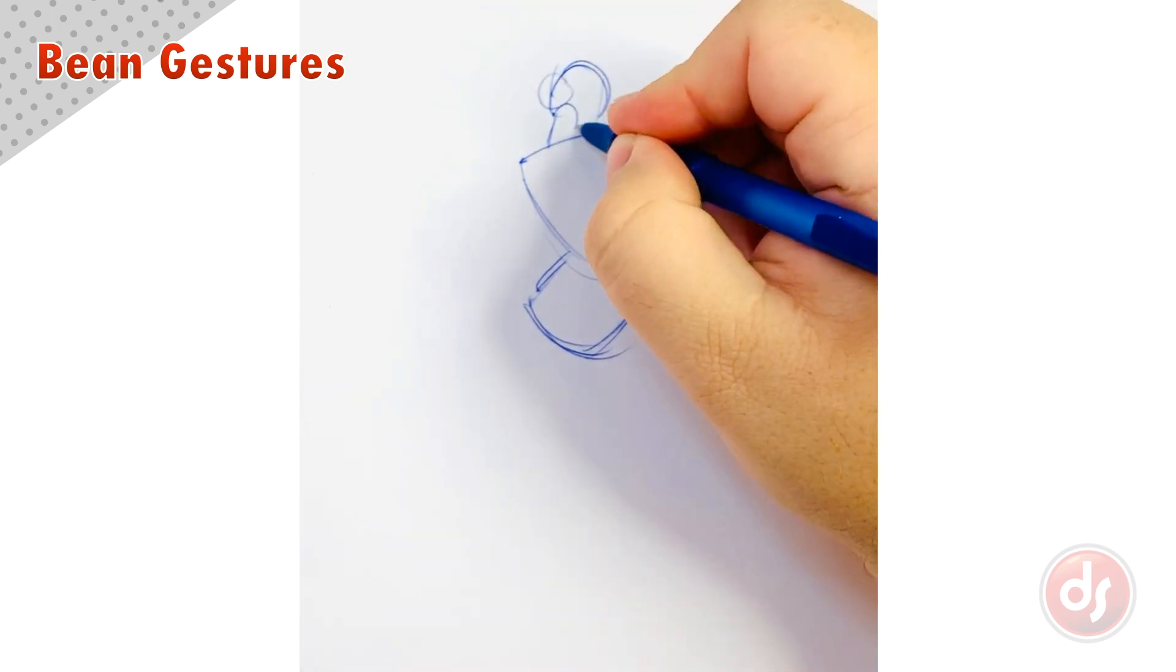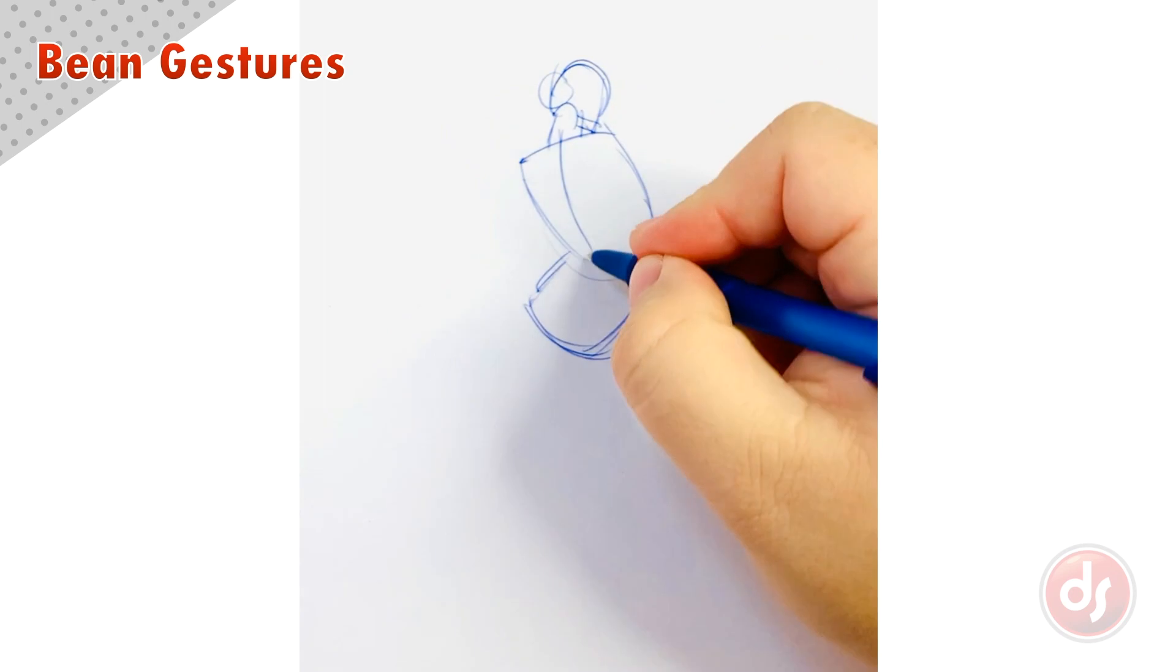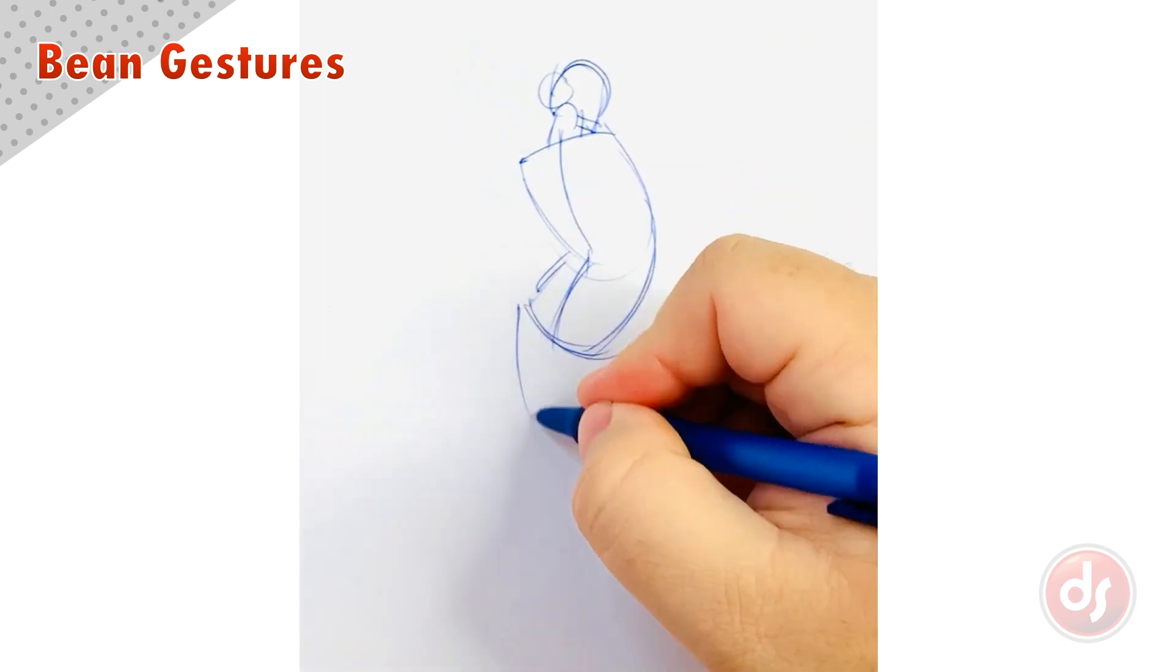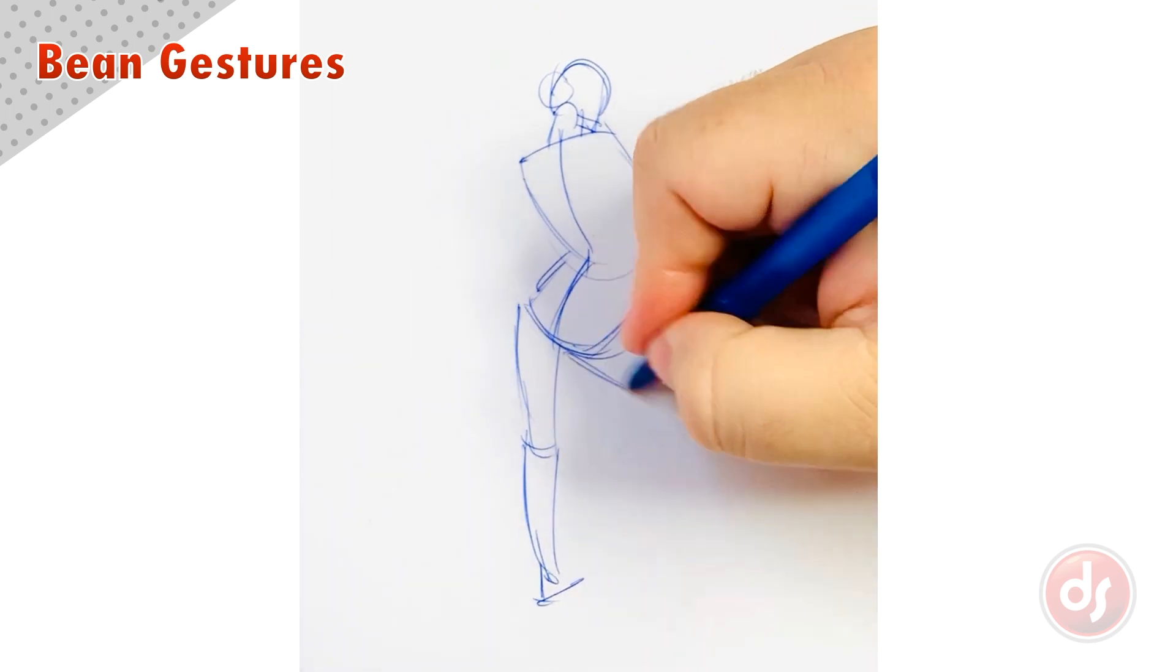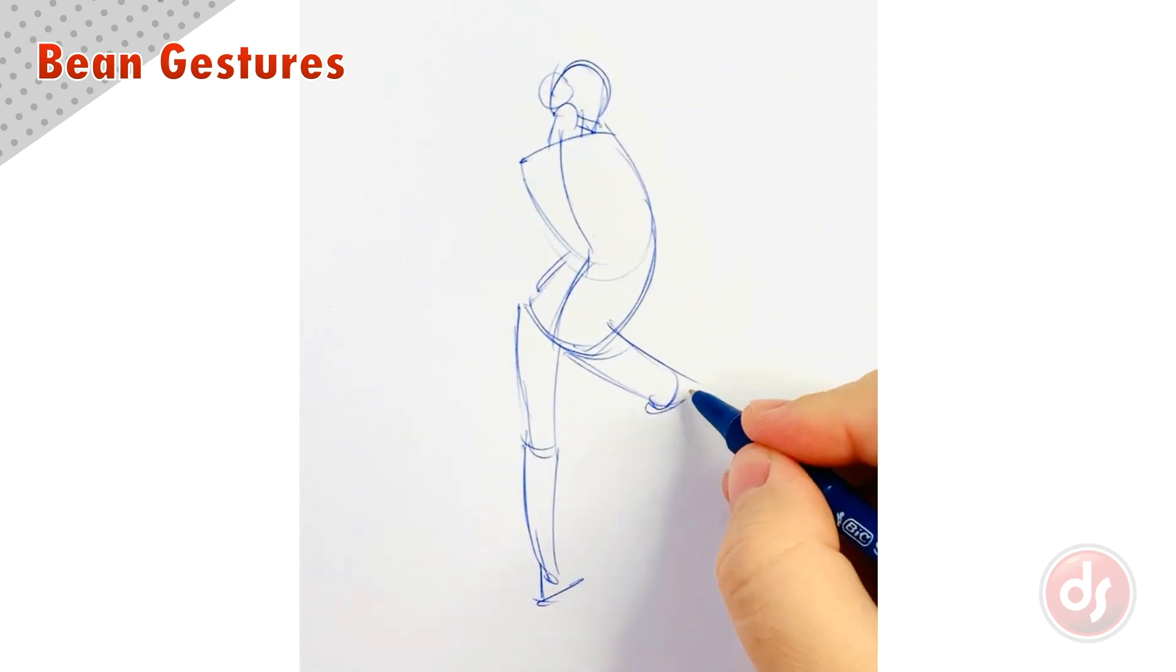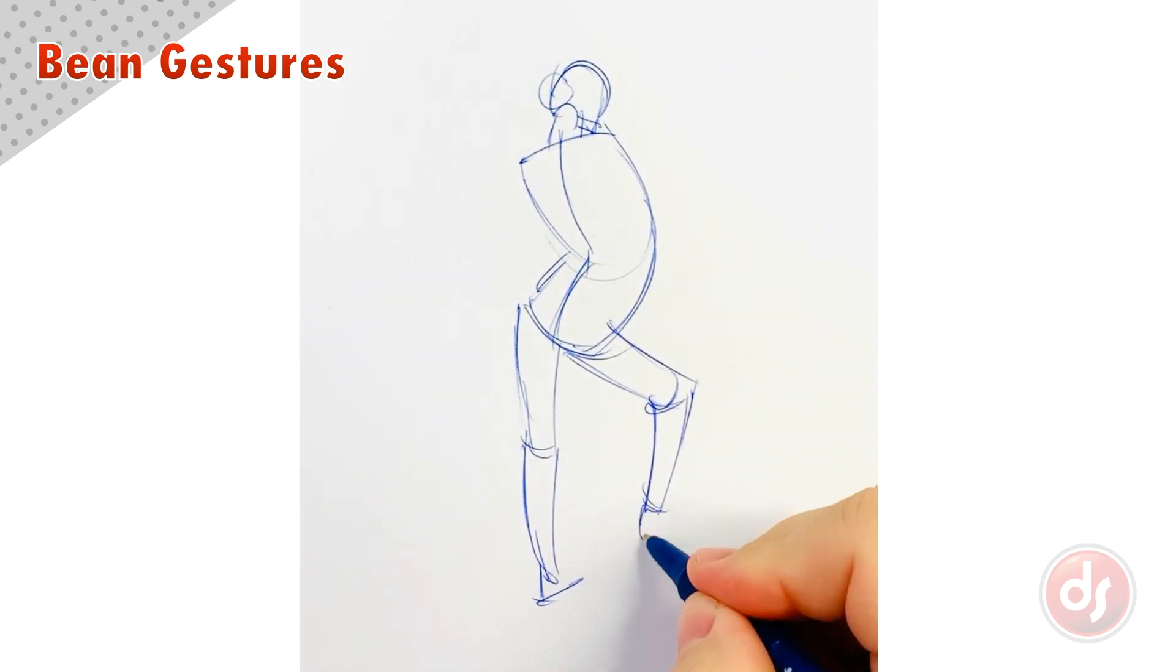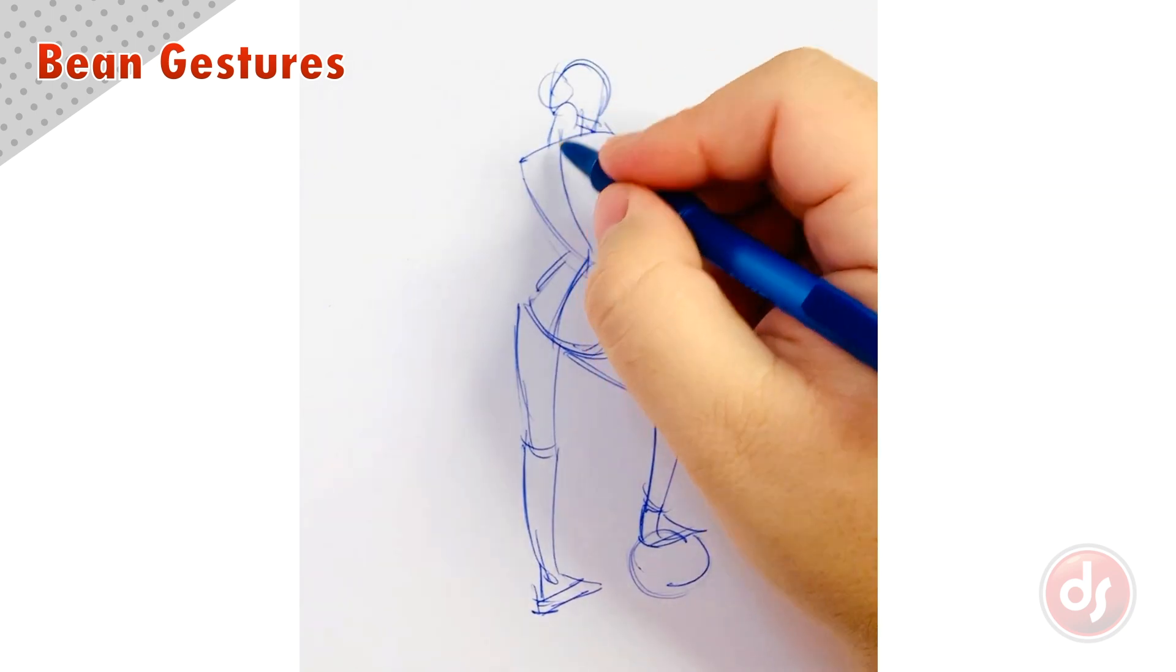Notice this bean starts the same way as the previous one, but by changing the center line we have turned the pose and made it a back view. Make sure to change the degree of the ellipses and make them more open when they are turning towards you to describe how the body moves in space.